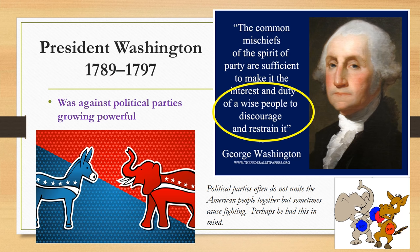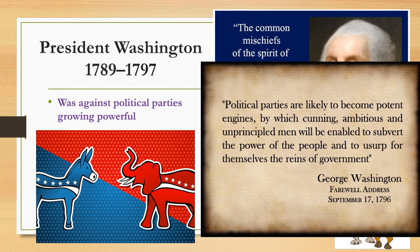President Washington was against political parties growing powerful. He predicted they could cause a lot of disunity in our country. He is known for two quotes: 'The common mischiefs of the spirit of party are sufficient to make it the interest and duty of a wise people to discourage and restrain it.' He also said political parties are likely to become 'potent engines by which cunning, ambitious, and unprincipled men will subvert the power of the people and usurp for themselves the reins of government.' He said this in his farewell address as he stepped down from the presidency.